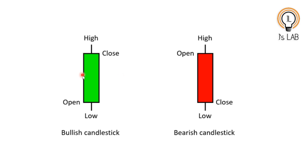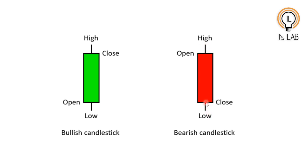A candlestick has a wider part called the real body. For a bullish candle, the bottom of the body is the open price and the top is the close price. The thin lines are called shadows — there is a high and a low. For a bearish candle, the top is the open price and the bottom is the close price, with a high and a low.